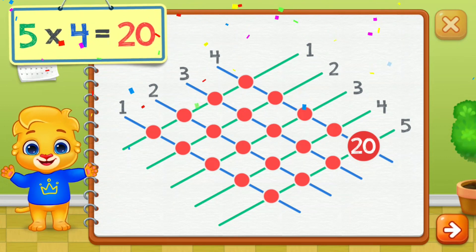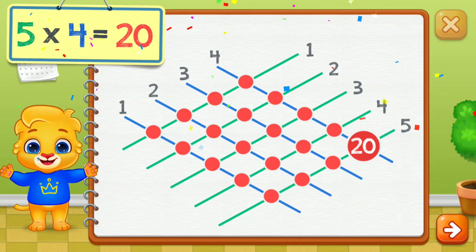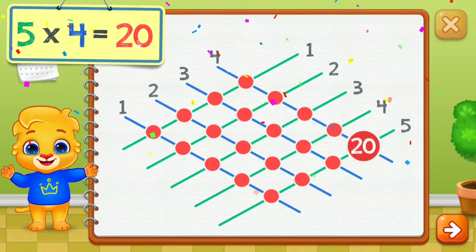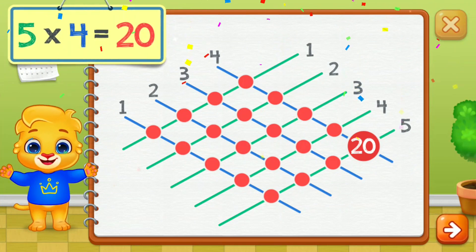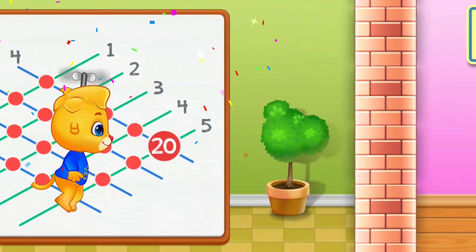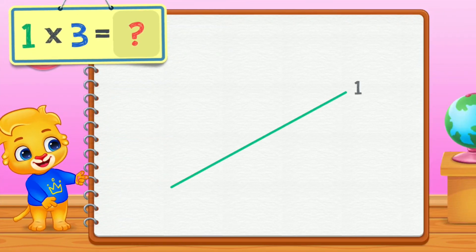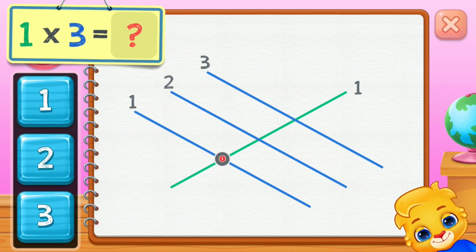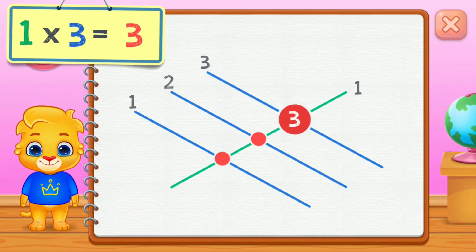Five times four equals twenty. One, two, three. Five times three equals — three.